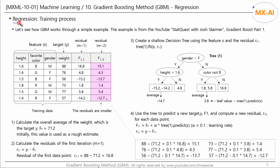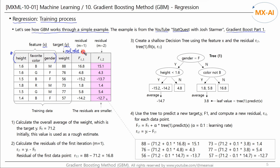Now let's look at the training process of GBM regression through a simple example. This example is from the 'Gradient Boost Part 1' video on YouTube StatQuest. The data has feature X and target Y, consisting of three features, with all real-valued targets and a total of six training data points. The first step is to calculate the overall average value of the target Y and use that as the initial prediction.